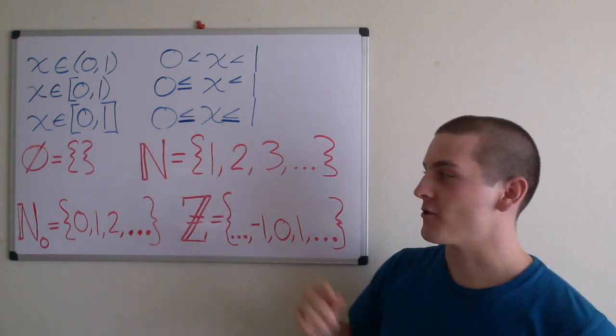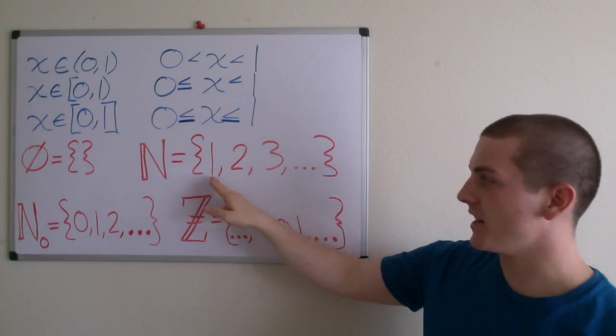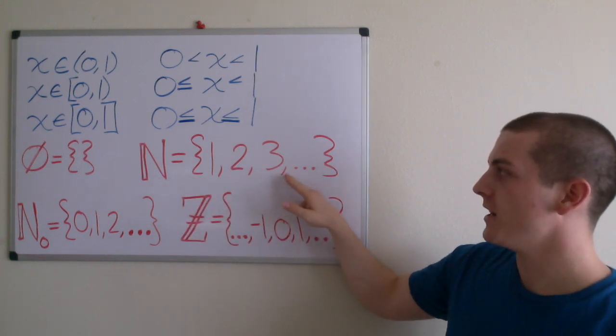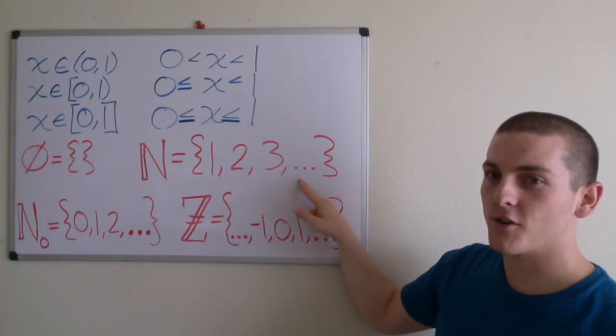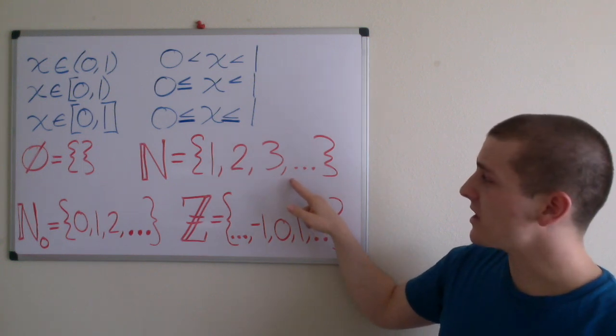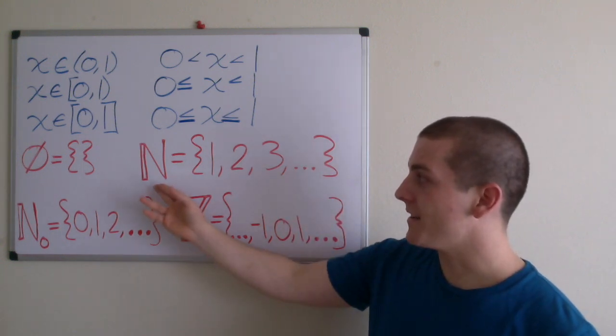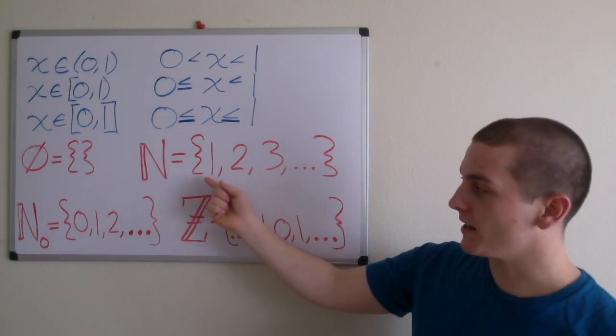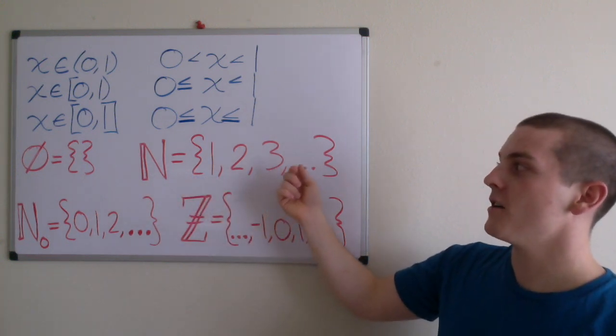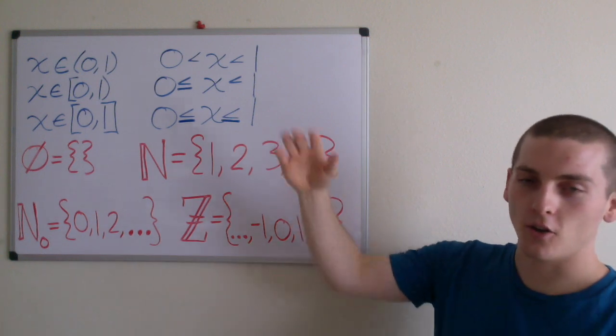The funny N here is the natural numbers, which is the set containing elements 1, 2, 3, and then these three dots here are called an ellipsis, which tells us that the pattern continues. So N is the set containing 1, 2, 3, 4, 5, 6, 7, all the way off to infinity.